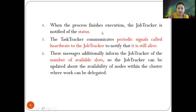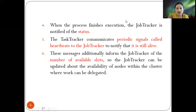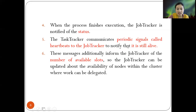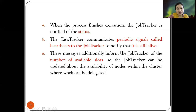The task tracker communicates periodic signals called heartbeats to the job tracker to notify that it is still alive — similar to how data nodes and name nodes communicate. Job tracker and task tracker communicate via heartbeat signals every three seconds, checking whether the task tracker is alive. These messages inform the job tracker of the number of available slots so the job tracker knows how many tasks can be assigned to each task tracker, maintaining the overall health of the ecosystem.